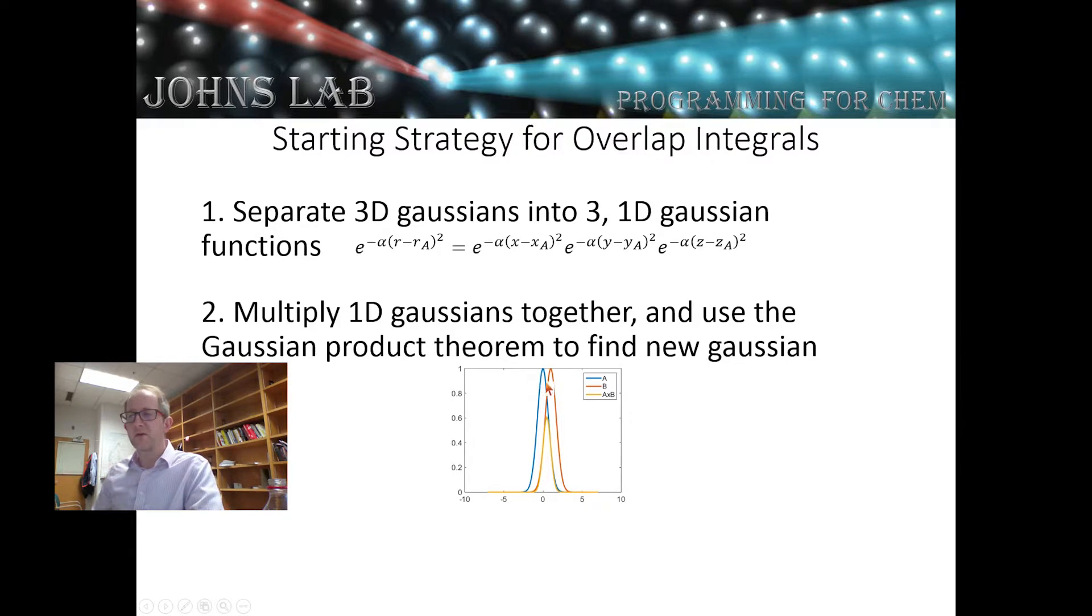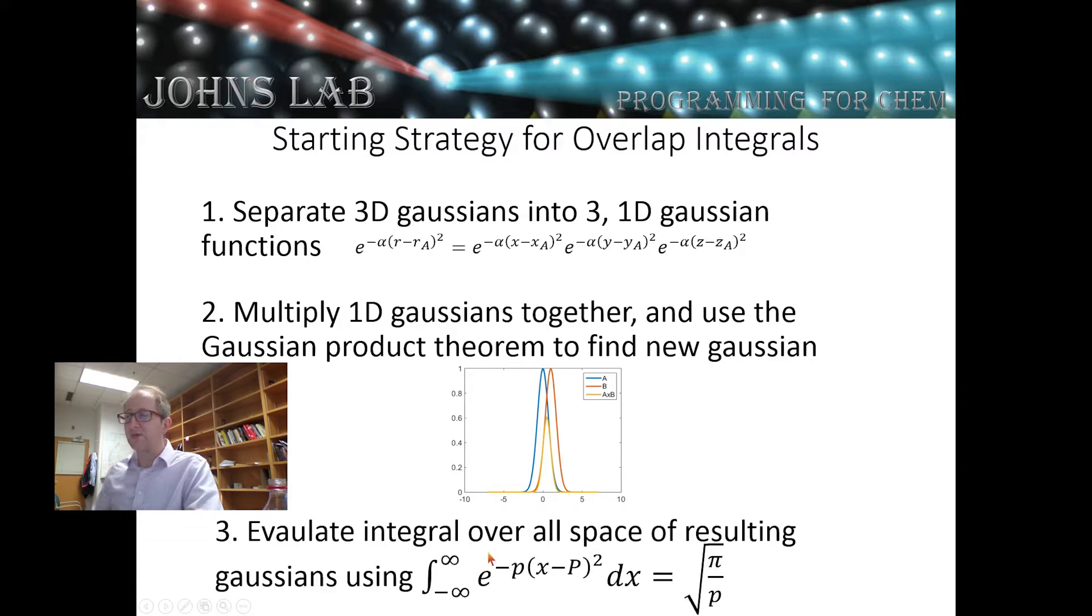The resulting Gaussian has a different exponent centered somewhere between a and b. If we know that our resulting function of a times b is another Gaussian, we can apply the Gaussian integral theorem to numerically evaluate it very simply.